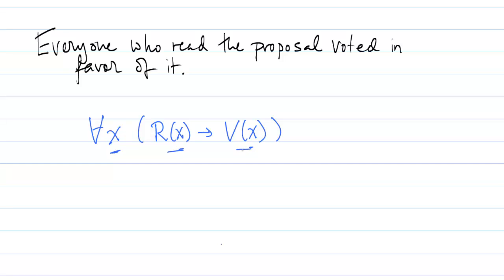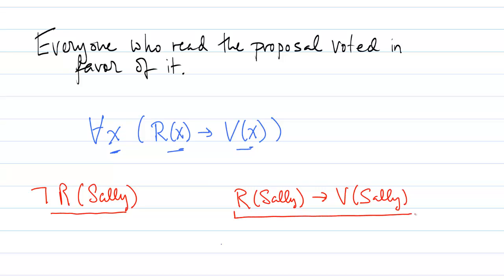Now suppose that there's an individual, say Sally, who did not read the proposal. So this expression here says that Sally did not read the proposal. Then this implication is automatically true, regardless of whether Sally voted in favor of the proposal.